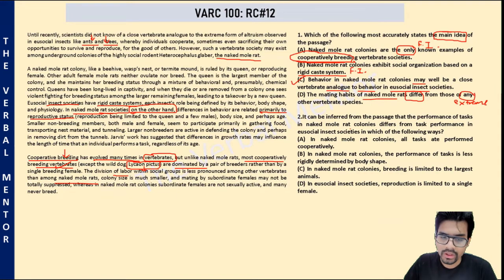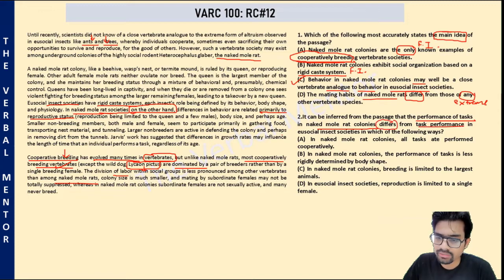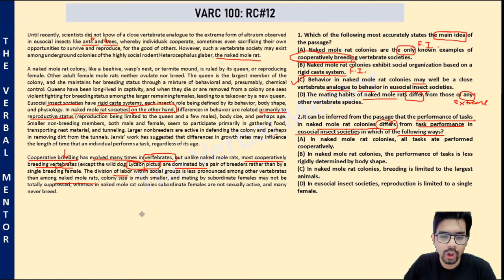Question two: it can be inferred from the passage that the performance of tasks in naked mole rat colonies differs from task performance in eusocial insect societies. In which of the following ways? The second paragraph is going to help us answer this.